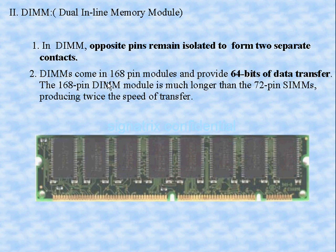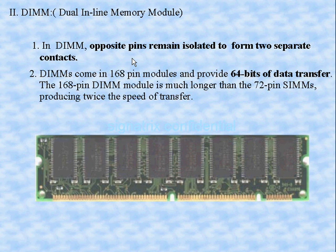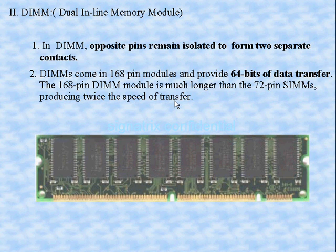Dual Inline Memory Modules come in 168-pin packages and provide 64 bits of data transfer. Compared to SIM, which had only 32 bits, DIM doubles the data transfer. The 168-pin DIM module is much longer than the 72-pin SIM and produces twice the speed of data transfer compared to SIMs.